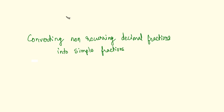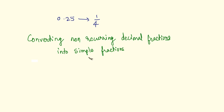Given a number with a decimal point like 0.25, how do you convert this number into a simple fraction, which is 1 by 4 in this case? That's what we are going to do in this video. Keep in mind that simple fractions are numbers in the form of a by b, that is numerator upon denominator. Also note that simple fractions are also known as vulgar fractions.